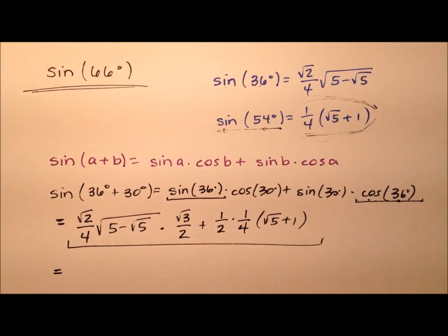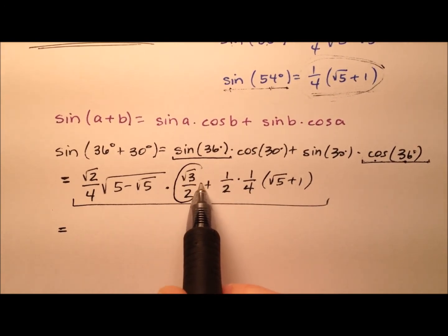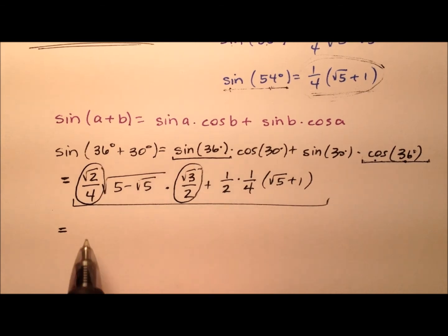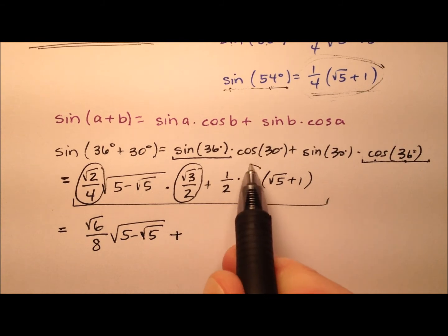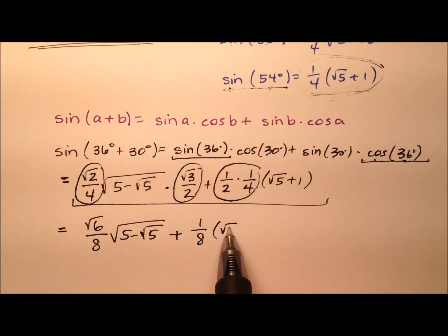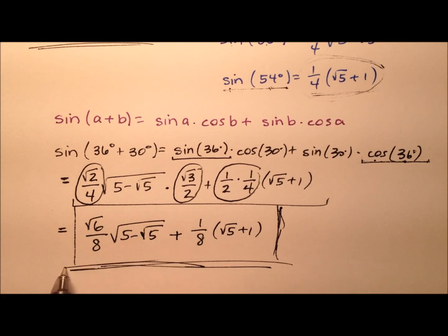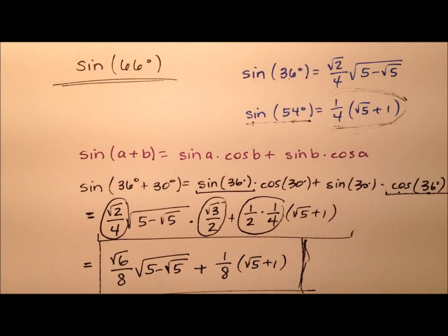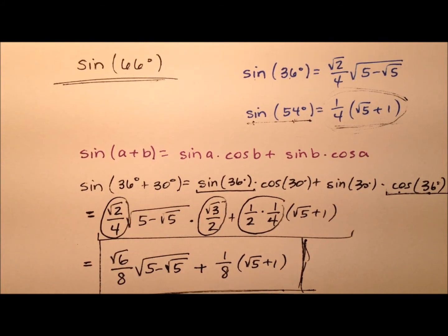At this point it's time to clean this up a little bit. It looks like I can take this fraction and this fraction out front and multiply those together. So it looks like I should have the square root of 6 over 8, and of course I'll multiply that by that radical expression. And then to that I'll add, and it looks like a half times a fourth will make an eighth, and multiply that by that square root of 5 plus 1. So this expression is not too bad at all, and we're saying that this is the exact value for the sine of 66 degrees.